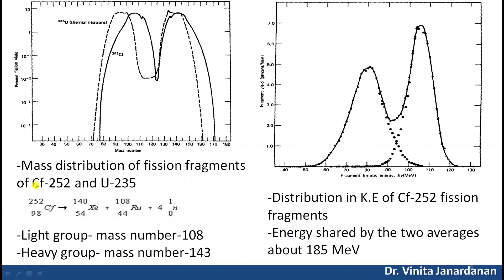This graph shows the mass distribution of fission fragments of californium-252 and uranium-235. The fission is predominantly asymmetric, so the fragments are clustered into two groups. In the case of californium-252, the fragments cluster into a light group with mass number 108 and a heavy group with mass number 143.